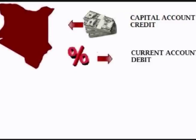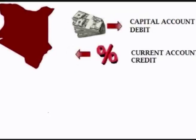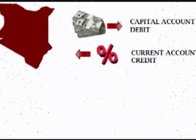However, the interest or dividend that is paid on those assets goes back out of the country and counts as a debit on the current account. It works the same the other way as well. When capital is transferred out of a country for investments, for instance to buy stocks and bonds, it counts as a debit on the capital account. However, the interest or dividend that is paid on those assets goes back into the country and counts as a credit on the current account.